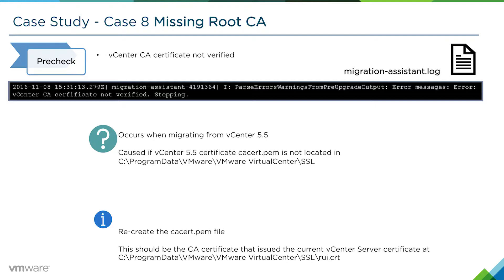This will occur if you're migrating from a Windows vCenter Server 5.5, and it's caused by the vCenter 5.5 certificate cacert.pem not being located in its respective directory.